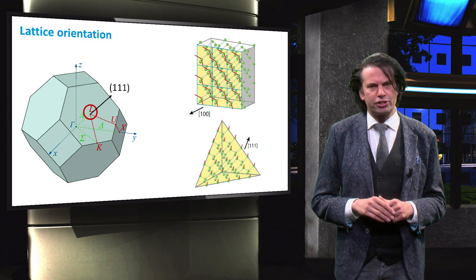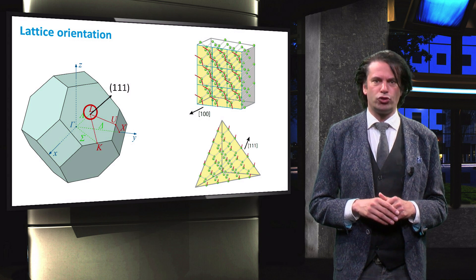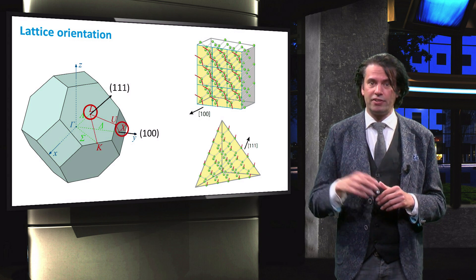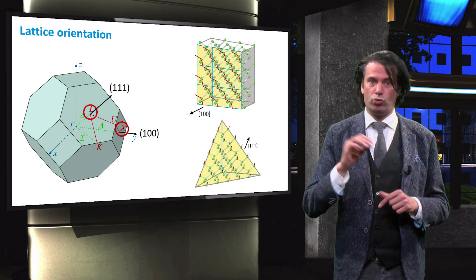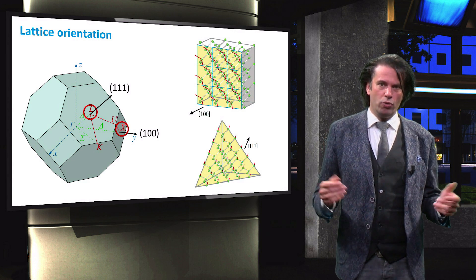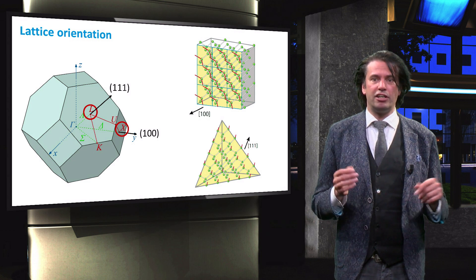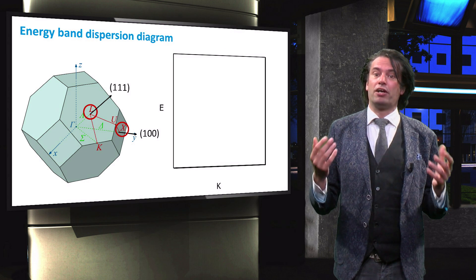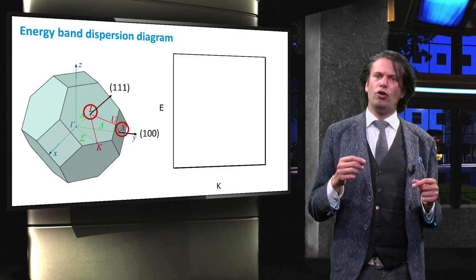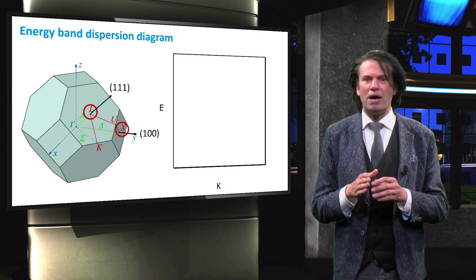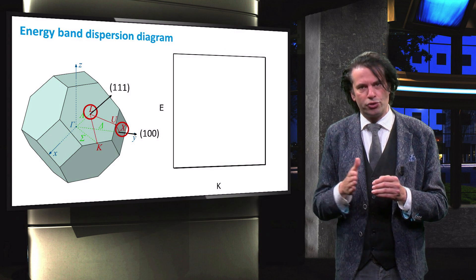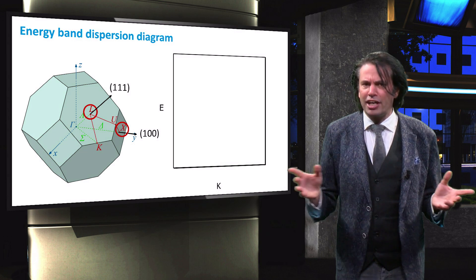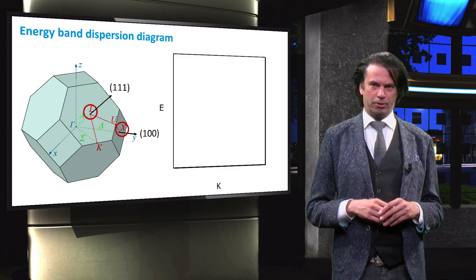Here, the L-direction represents the 111 surface and the X-direction represents the 100 surface. As we know, an electron can move through a crystalline lattice if it has enough momentum. We can therefore build up a graph with the energy level on the vertical axis and the momentum of the charge carriers on the horizontal axis. The charge carrier momentum is also known as the crystal momentum.